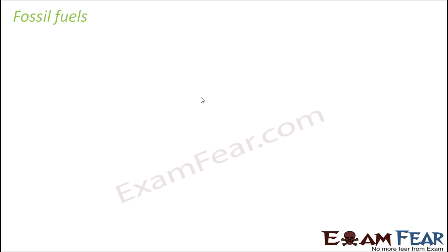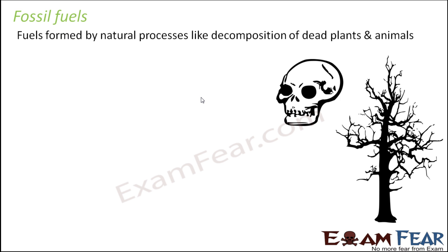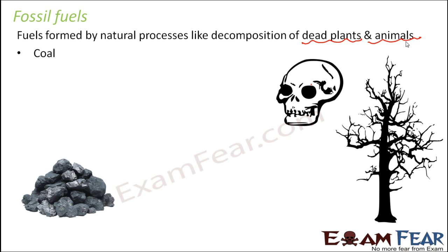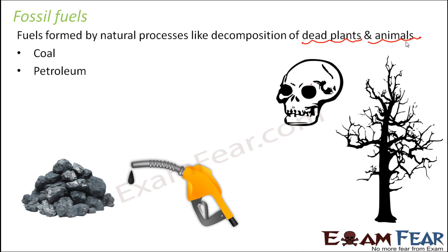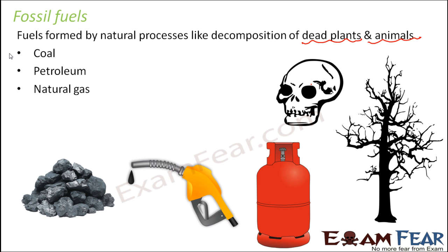When we talk about exhaustible resources, the first resource that strikes our mind are fossil fuels. Fossil fuels are fuels formed by natural processes like decomposition of dead plants and animals. Anything formed from dead plants and animals is called a fossil, and since they act as fuels, they are called fossil fuels. Examples of fossil fuels are coal, petroleum, and natural gas.